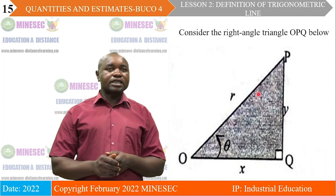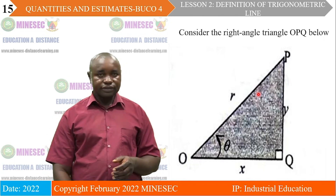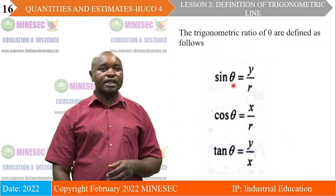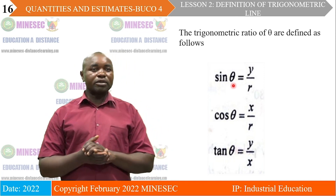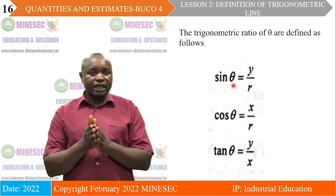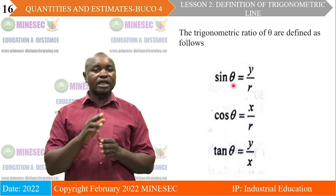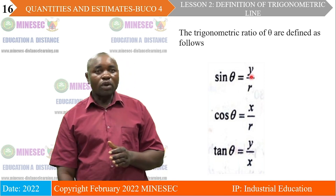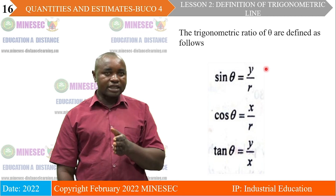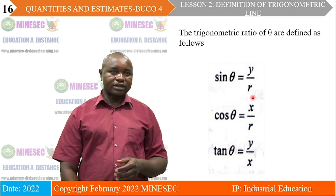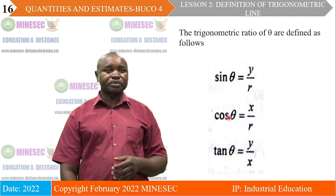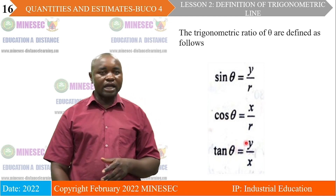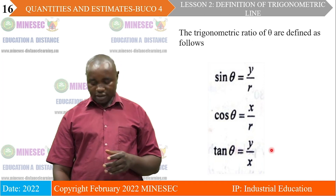Consider the right-angle triangle. We know that the sine of theta is equal to y on r, where y represents the vertical axis which is positive, and r is the hypotenuse. The cosine is x on r, and the tangent is y on x — that is, opposite on adjacent.